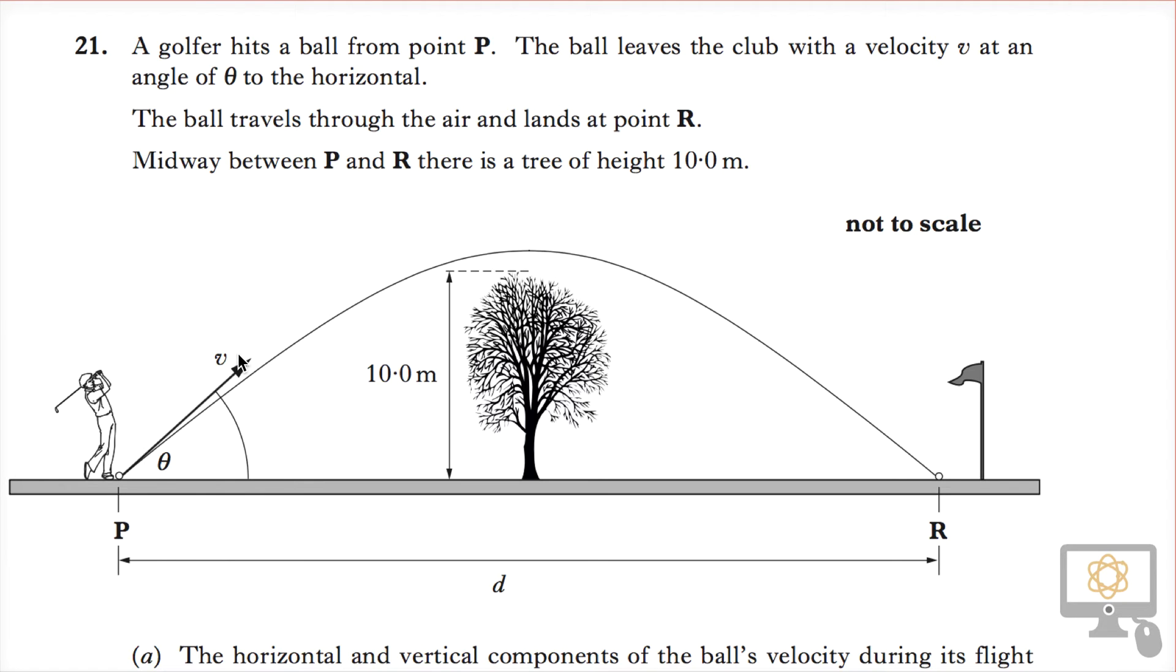This is the actual velocity which can be split into two components: the horizontal component going along in this direction and the vertical component going up. But we're not told what those components are and we're not told what v is at the moment.